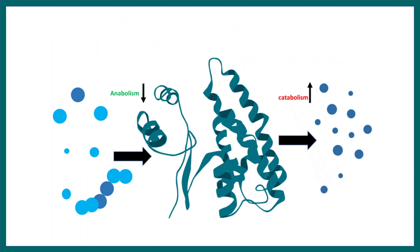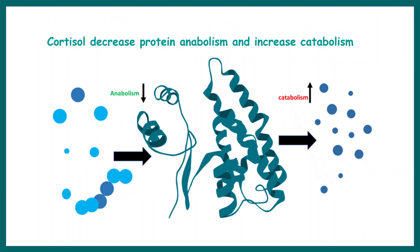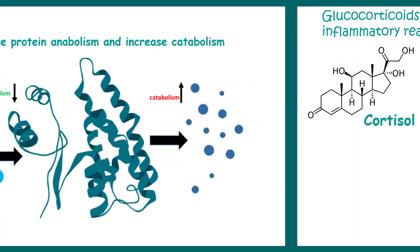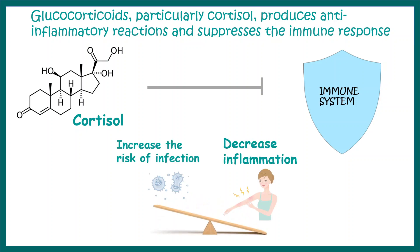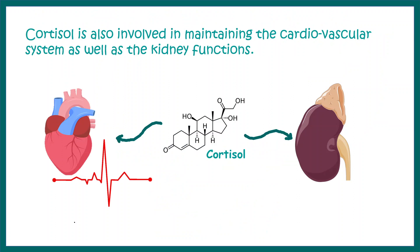Cortisol decreases protein anabolism and increases protein catabolism, so overall it increases catabolic or breakdown reactions. Glucocorticoids, particularly cortisol, also produce anti-inflammatory responses. Cortisol can suppress the immune system temporarily — it decreases inflammation but increases the risk of infection, so it is used as an immune suppressant. Cortisol is also involved in maintaining cardiovascular function and kidney function.